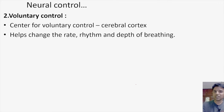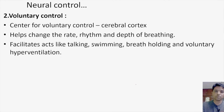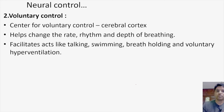Voluntary control helps to change the rate, rhythm, and depth of breathing. When I am talking, I have to change my rate of respiration and rhythm — continuously expelling air and then taking air in. The depth of breathing is also changed. Examples include when a person is talking, swimming and holding their breath underwater, or voluntarily hyperventilating. Whenever I voluntarily want to change rate, rhythm, and depth of breathing, the center for voluntary control comes from the higher center — the cerebral cortex.